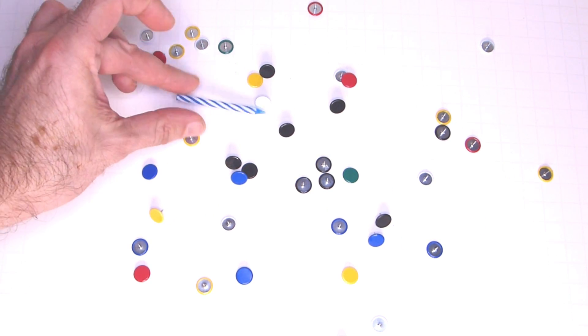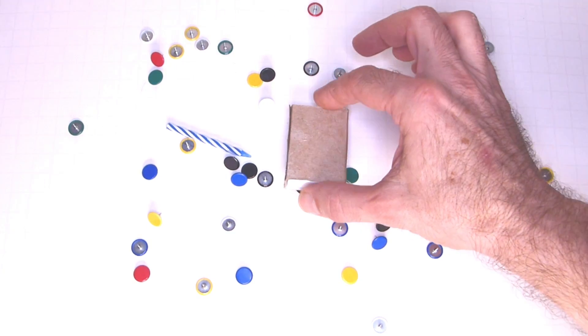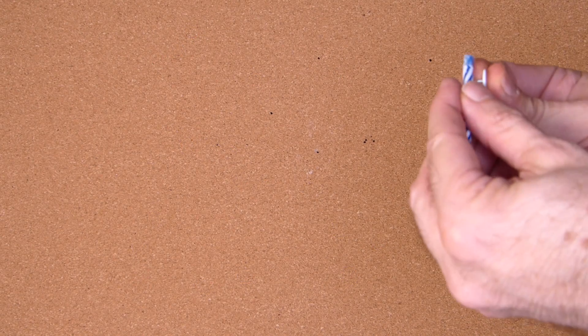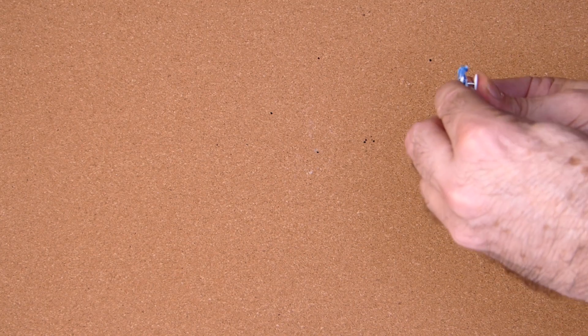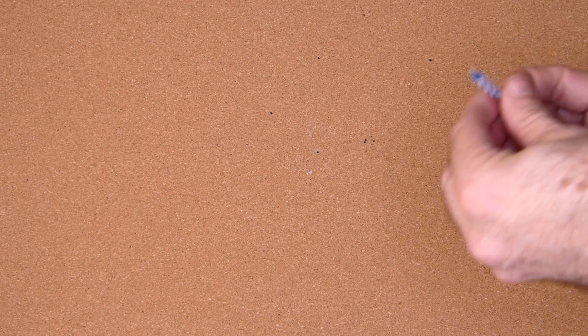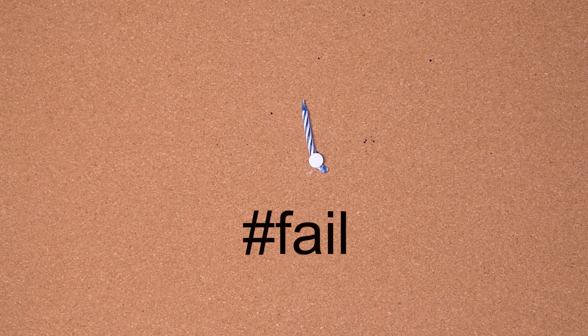In the candle problem, we're given some thumbtacks, a candle, and a box of matches. Don't try this at home without an adult present. The goal state is to attach the candle to a wall in such a way that we can light the candle without burning the house down. Again, don't try this at home.